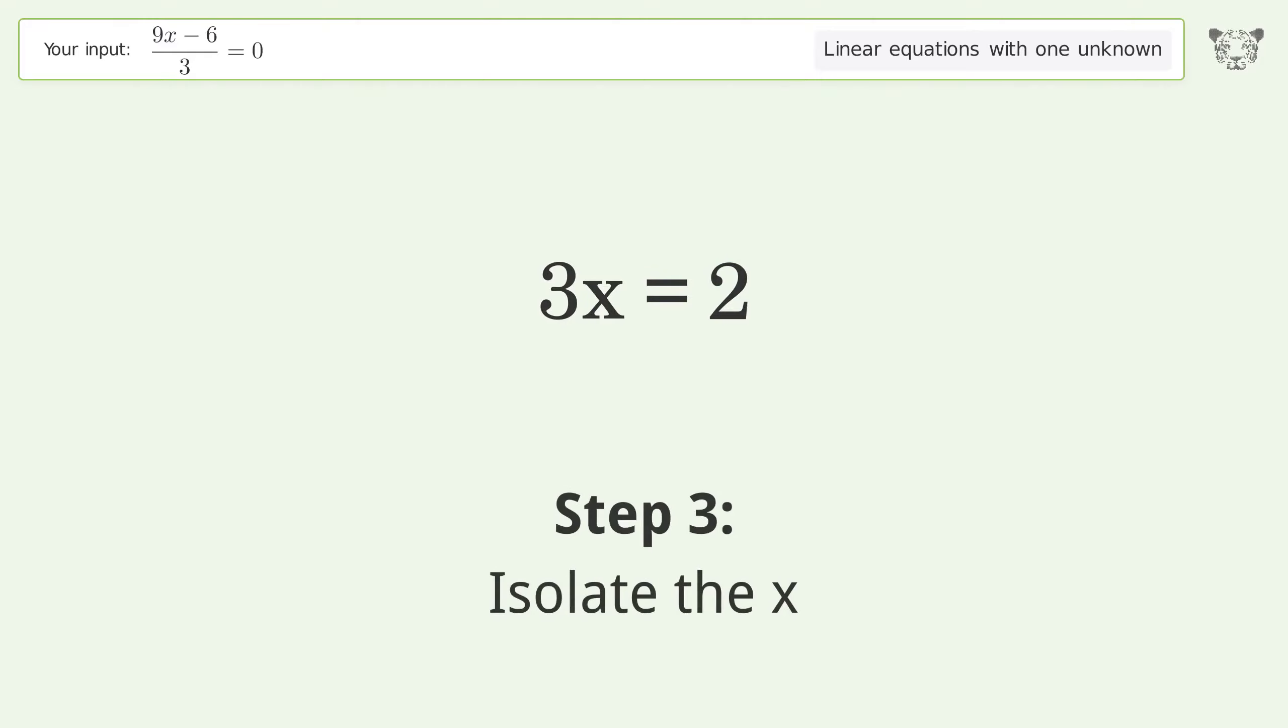Isolate the x by dividing both sides by 3. Simplify the fraction. And so the final result is x equals 2 over 3.